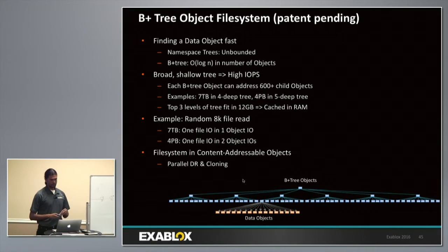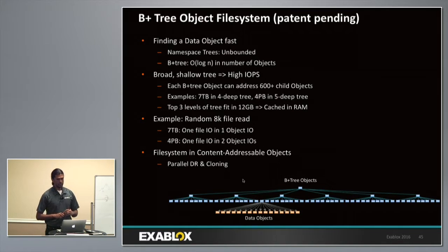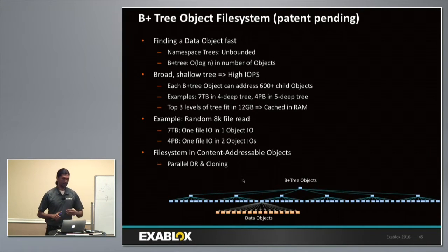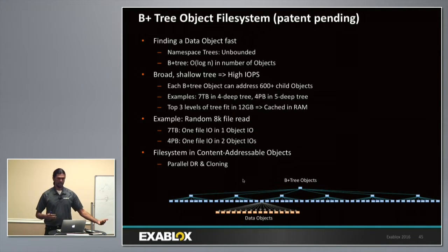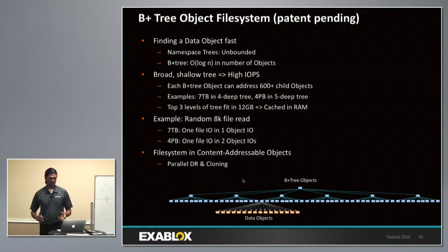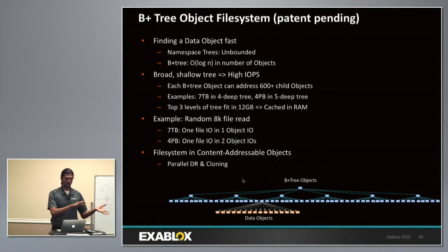For example, if you have a 7 terabyte file system, in just one object IO you can fetch that object — one file IO translates to one object IO. And if you have an even bigger 4 petabyte file system, you have to fetch one interior node of the tree and then fetch the data object — that's just two object IOs. So in two object IOs you can do one file IO. Having this really broad shallow tree lets us translate object IOPS, which the substrate gives us, to file IOPS.